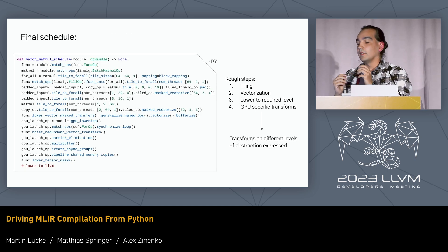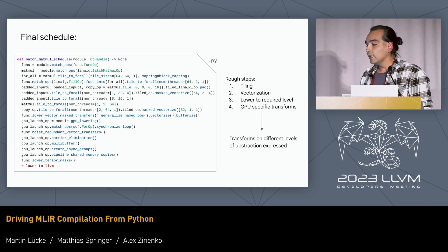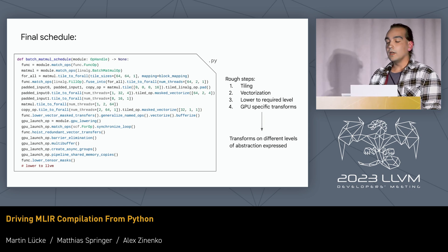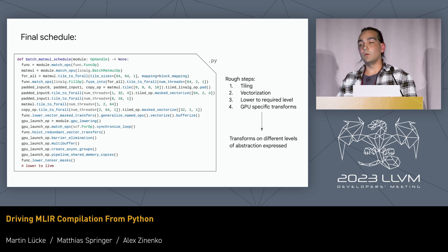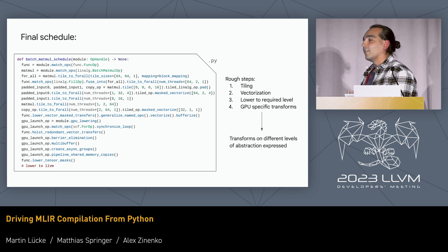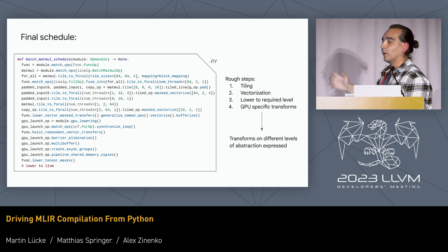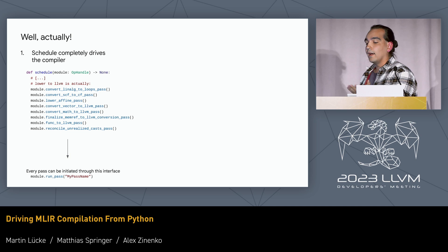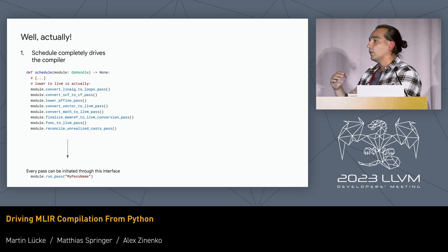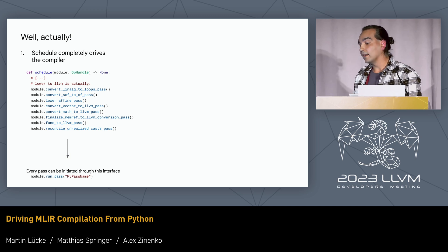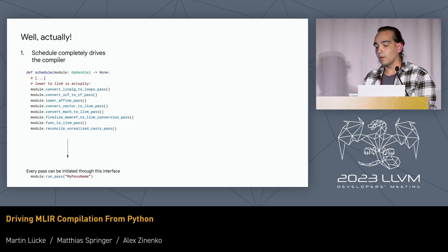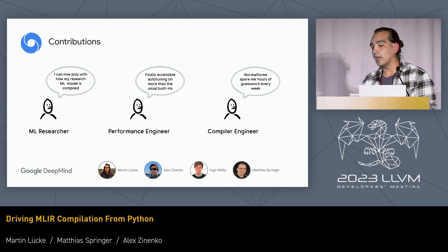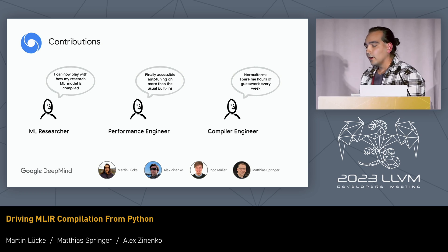The huge giant schedule is done in our system like this — still quite complicated but much, much easier. You have tiling, vectorization, we lower and do some GPU-specific transforms, and at the end we lower to LLVM. This talk is called driving the compiler from Python because this lower-to-LLVM step is just a module-convert-linalg-to-loops pass, convert-SCF-to-CF pass. We can do transforms at different granularity levels — it can be a single transform but also a whole pass — so we actually completely drive the compiler from this schedule representation. I'll end with the contributions — hats off to my collaborators. I had a very good time working on this, and I'm looking forward to your questions.